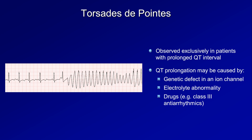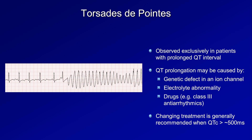An interesting dilemma is that QT prolongation is not really a side effect per se, but rather the confirmation that the drug is doing what we want it to do. These drugs interfere with reentry-based arrhythmias by prolonging the effective refractory period, so we expect some degree of QT prolongation, just not enough to cause torsade. Most docs recommend changing treatment when the QT interval corrected for heart rate, known as the QTc, exceeds 500 milliseconds. If torsade does occur, the first-line treatment is IV magnesium, irrespective of whether the patient's serum magnesium level is already normal.